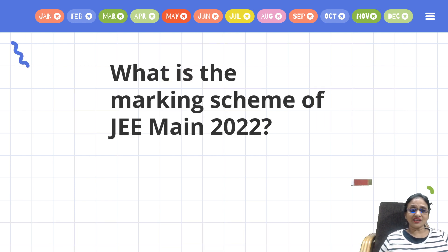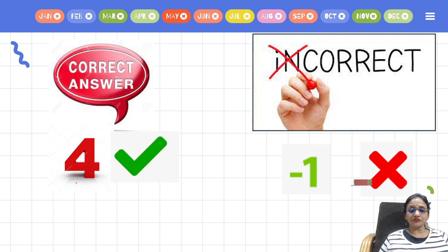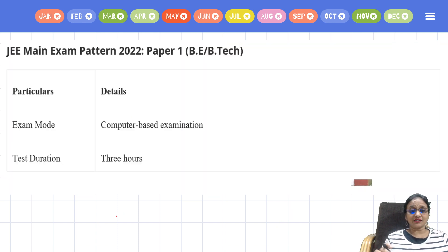The next FAQ is the marking scheme for JEE Mains 2022. Each question carries four marks. For a correct answer you will be allotted four marks. If the answer is incorrect, there is negative marking where minus one will be deducted. So: plus four for correct, minus one for incorrect.